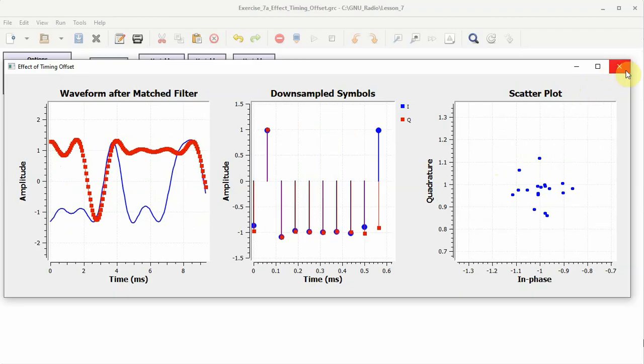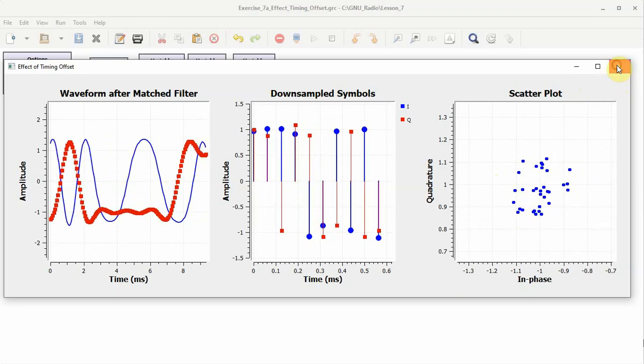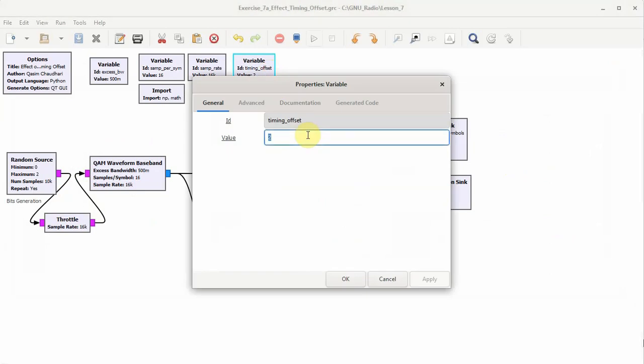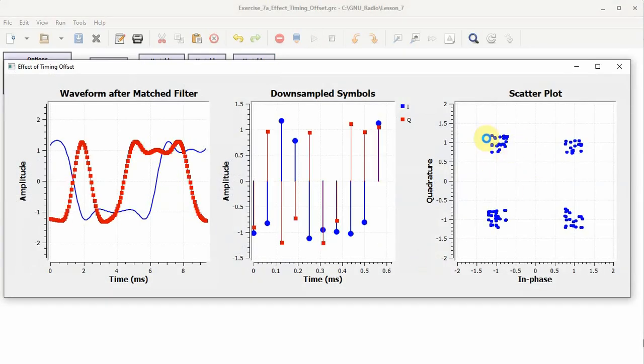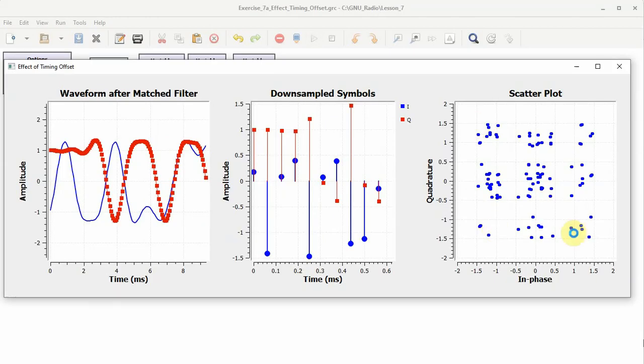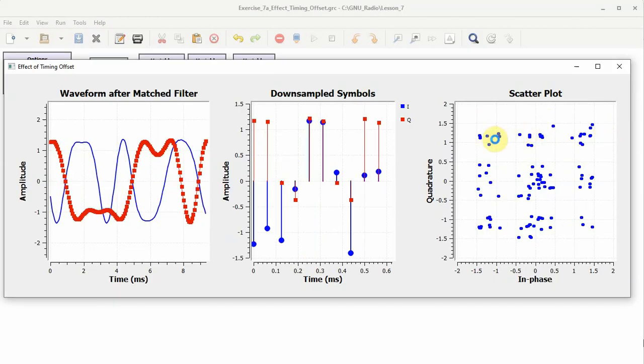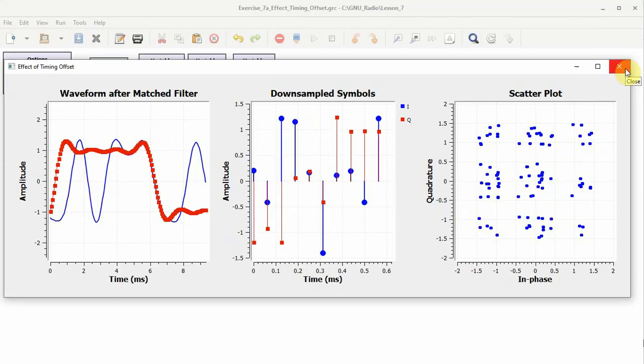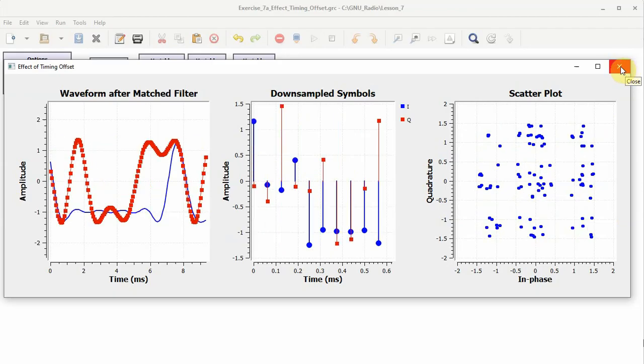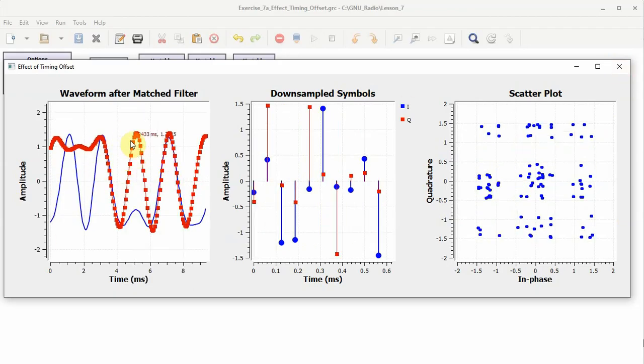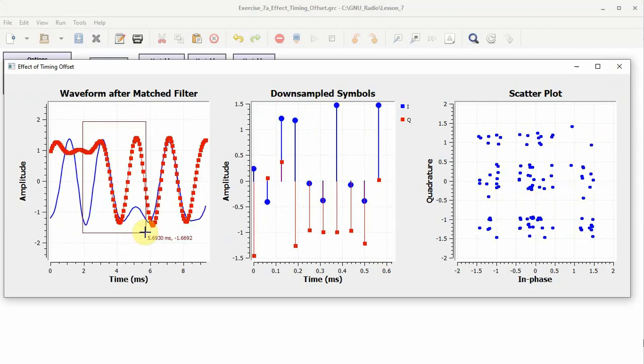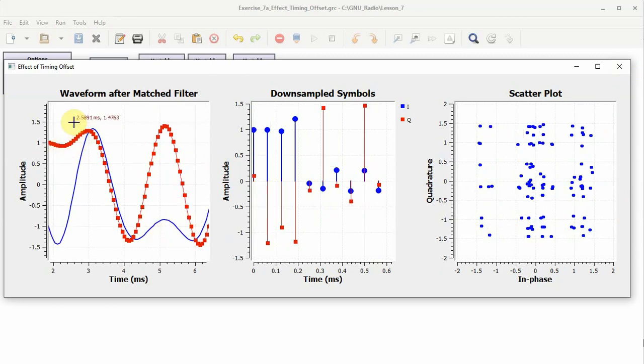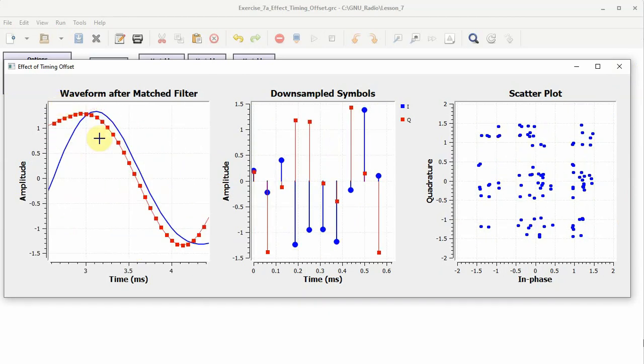That is why we can see that the cloud has grown with the timing offset. If we introduce a larger timing offset, you will see that the cloud size has grown more. We can see that now there is a lot of inter-symbol interference present. So this is the effect of the timing offset, and this is why we need to figure out which sample out of all these corresponds to our symbol decision. The job of the symbol timing synchronization scheme is to locate the sample out of all these which correspond to the actual transmitted symbol.